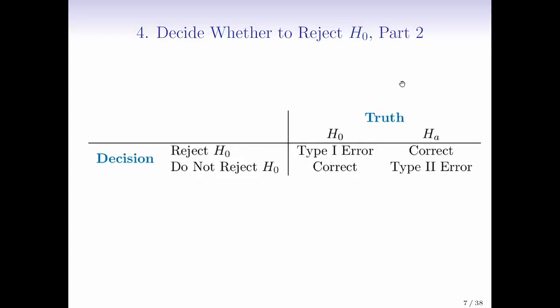And then there's two possible decisions we can make, those are shown in the rows. Either we reject the null hypothesis or we do not reject the null hypothesis. And of course, in reality, we never know which column we're in. We know which row we're in, but not which column we're in. Exactly. Because the rows correspond to a decision that we're making. It's my choice whether or not I reject the null hypothesis. But I have no certainty about which column I'm in.